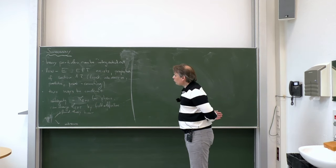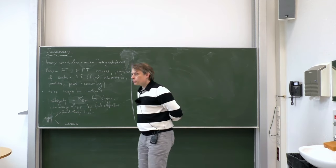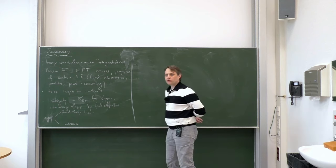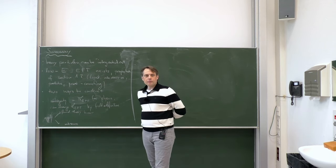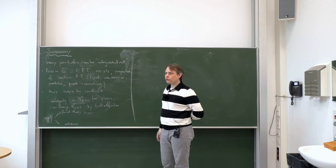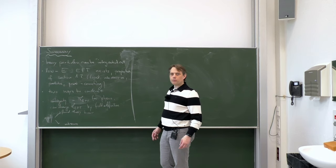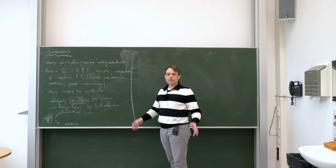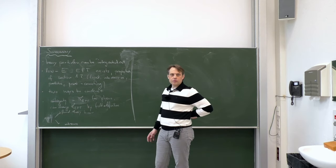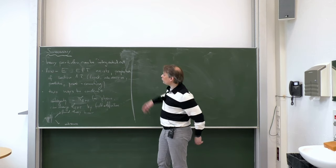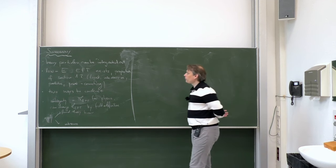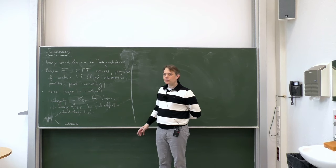Today we will end our first section on the tree-level construction of effective field theories and begin with the second section on loop calculations. Here is a summary of what we did: if we have a fundamental theory which contains heavy and light particles, then the heavy particles can be integrated out. We can literally take the path integral over all field configurations of the heavy and light fields, integrate over the heavy fields, and receive a path integral only over light fields — this is the effective field theory which correctly describes light degrees of freedom in an expansion of ratios of the light energy scale divided by the heavy masses.